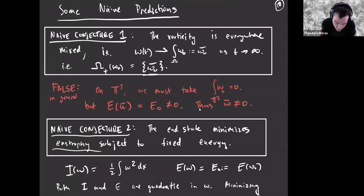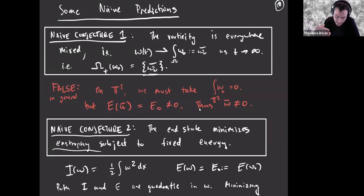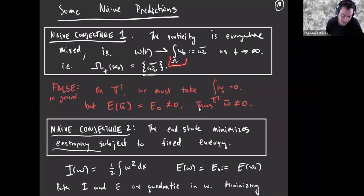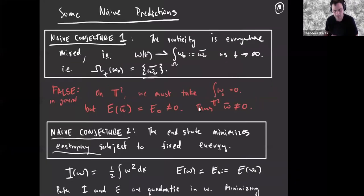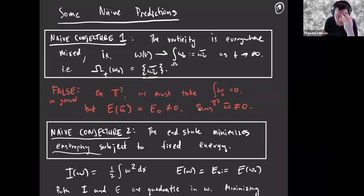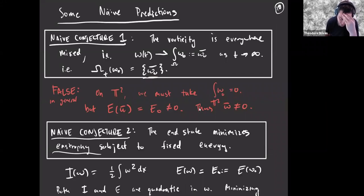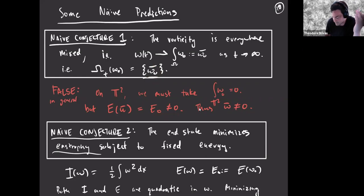Let's make some naive conjectures about what the flow might look like at infinity. The first is that maybe Euler is the most efficient mixer it can be, and therefore the long-time limit is just replacing the vorticity by its average over the domain. But this is impossible, at least in some situations. Consider the torus: then the average of the vorticity is zero if it's to be periodic (it's a perpendicular gradient), so this number would be zero. But the energy is conserved on the weak limit, and the energy was not zero. So the first naive conjecture is immediately ruled out.